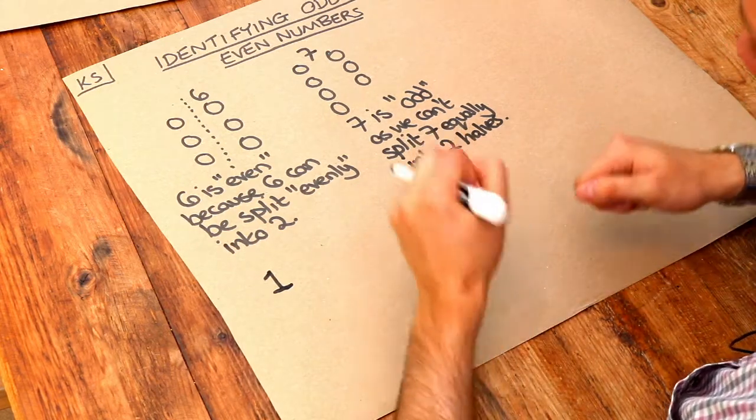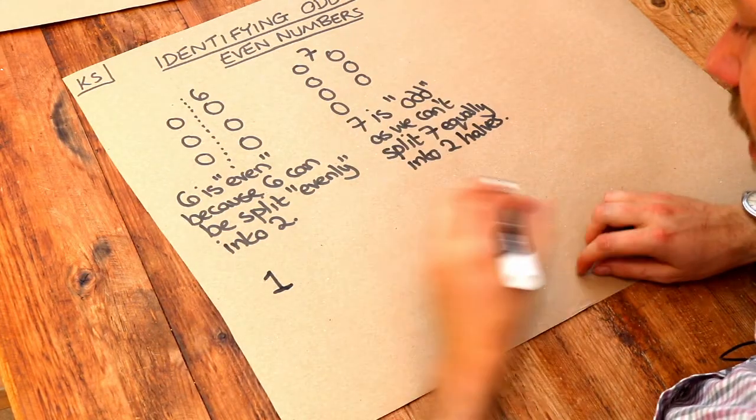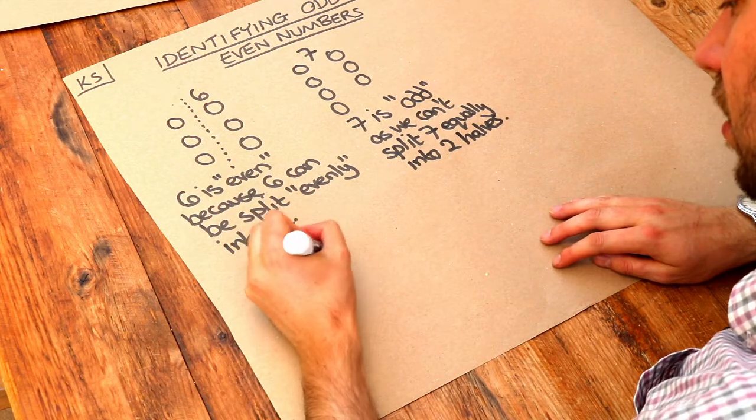Well let's look at one. One, can you split that into two? Well if you've got one person, no you can't split that into two. So one is going to be odd.